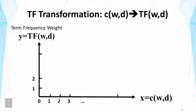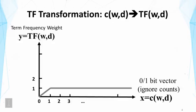First, let's talk about the TF transformation. That is to convert the raw count of a word in the document into some weight that reflects our belief about how important this word is in the document. And that would be denoted by TF(w,d) as shown in the y-axis. In general, there are many ways to map that. Let's first look at the simple way of mapping.